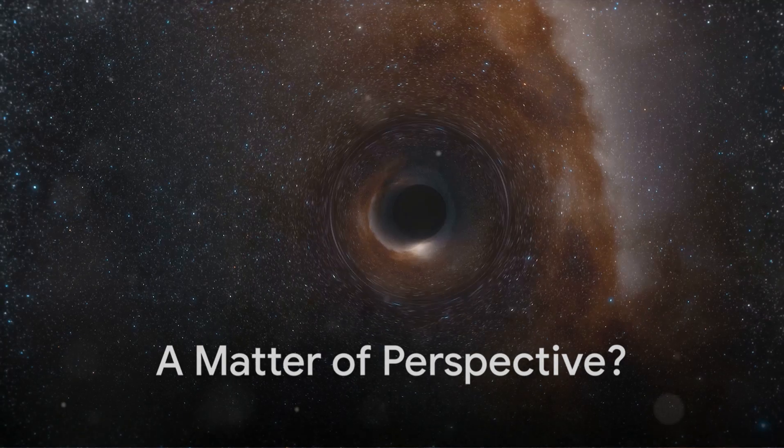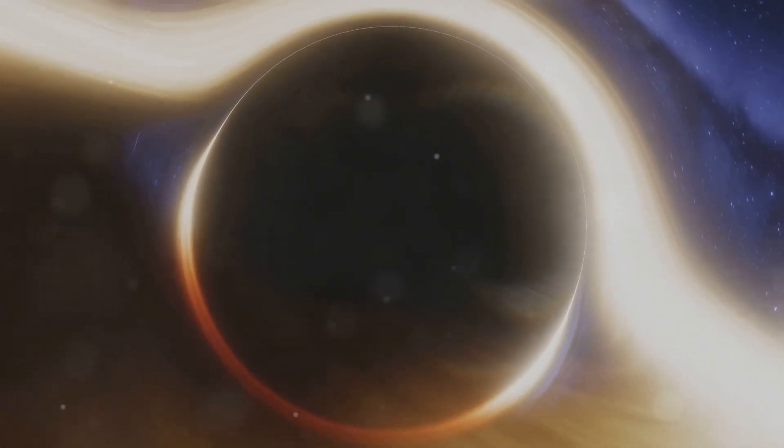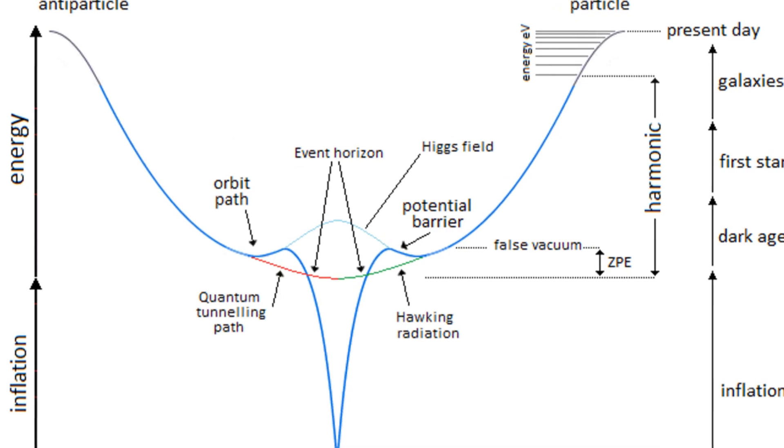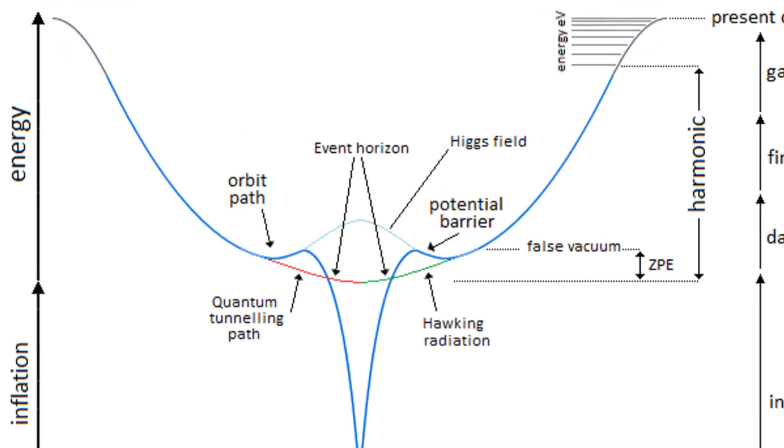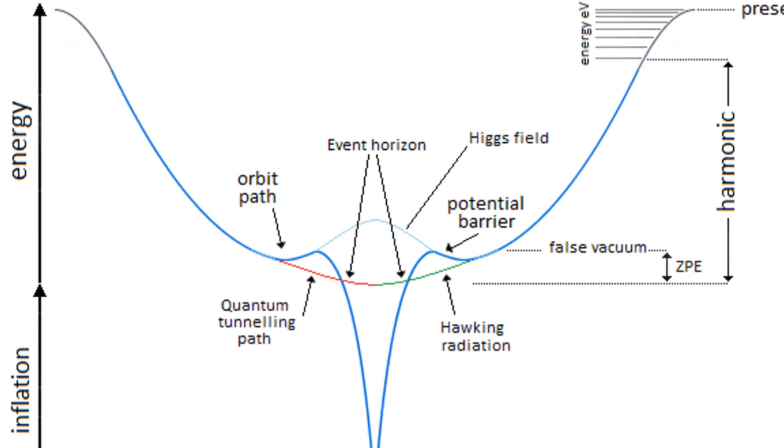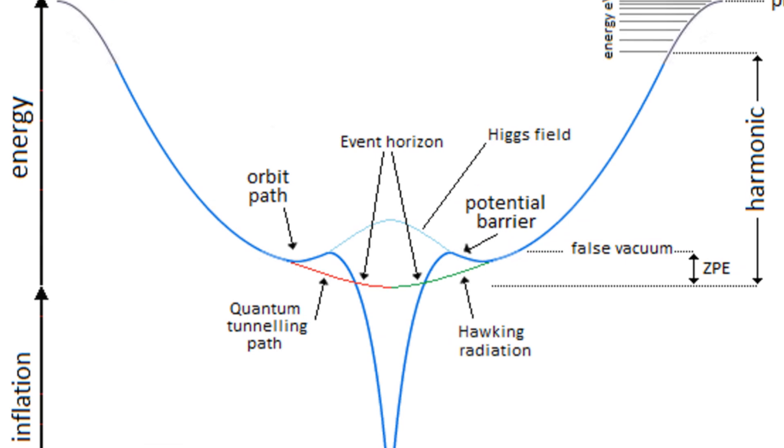Another intriguing idea, known as black hole complementarity, suggests that the paradox arises from our limited perspective. This principle proposes that information is both reflected by the event horizon, like light bouncing off a mirror, and passes through it, falling into the singularity. An observer outside the black hole would see the information reflected back, while an observer falling into the black hole would see it pass through the event horizon. This idea suggests that there's no single truth about what happens to information at the event horizon, only different perspectives.